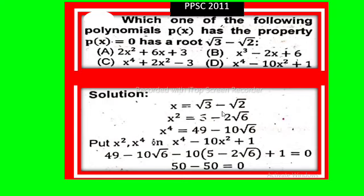Squaring again on both sides, x⁴ = (5 - 2√6)² is equal to